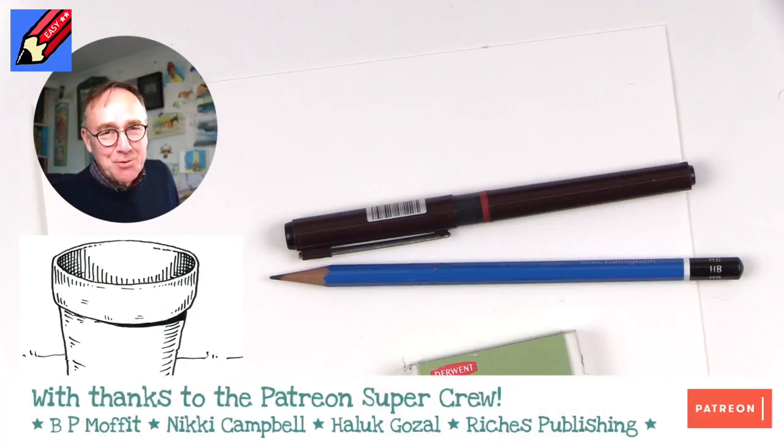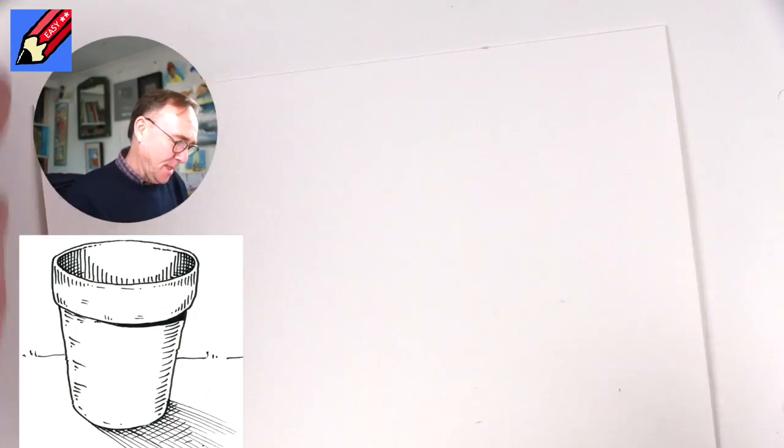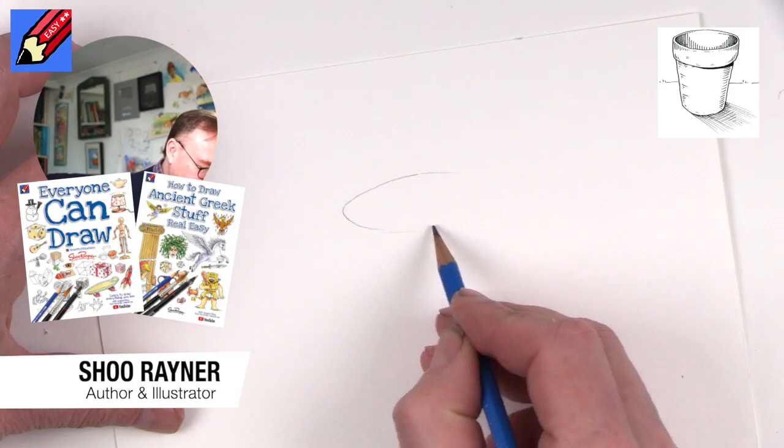To draw a flower pot we're going to need a pencil and a pen and an eraser. We're going to start by drawing an ellipse, which is a tricky kind of shape.